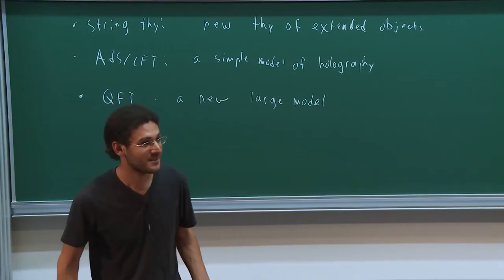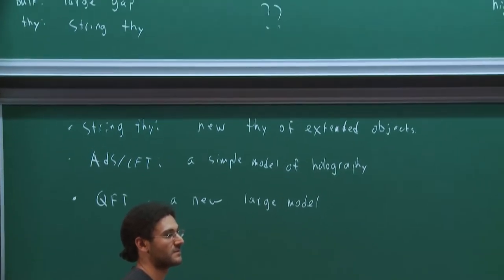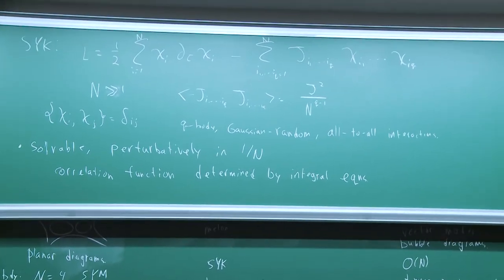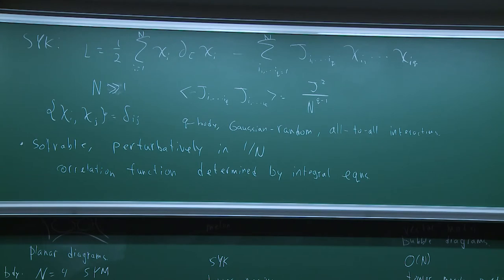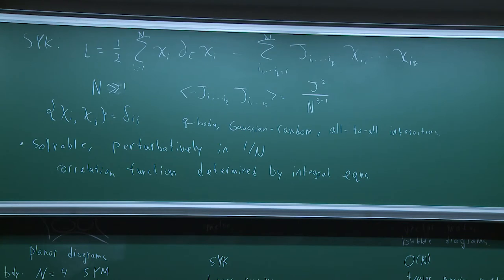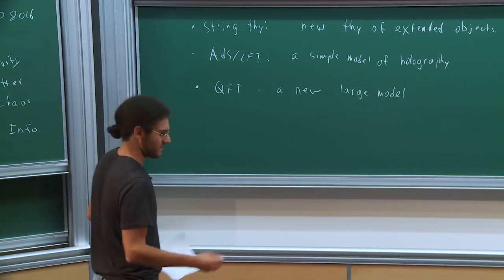Regarding why dimensions enter the large-N counting: in zero plus one dimensions, the graphs are selected by the power of N. The selection of graphs is dimension-independent — that's correct. If you write the same Schwinger-Dyson equation for the two-point function in two dimensions rather than one, and assume an IR fixed point ansatz, you'll get an inconsistency. The diagrams selected are the same, but the fixed-point condition fails in higher dimensions.